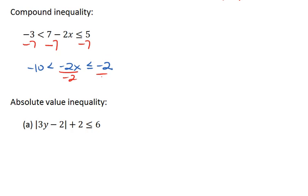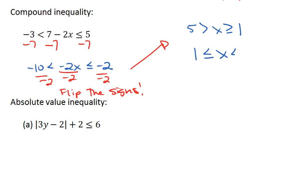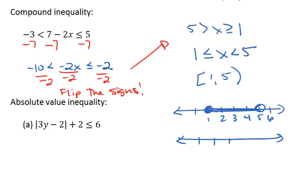Then we divide all sides by negative 2. This does flip the signs. So we have positive 5 is greater than x is greater than or equal to 1. We can then rearrange this: 1 is less than or equal to x is less than 5. In interval notation or on a number line, we can also use the brackets and the parentheses.